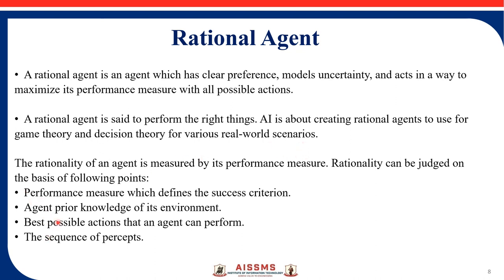The criteria of a performance measure defines the success criteria, the agent's prior knowledge of its environment, the best possible actions that an agent can perform, and the sequence of percepts. All things related to rational agents depend on these four things, which enable the rational agent to achieve its goal.